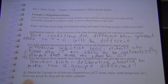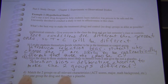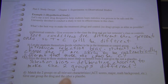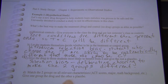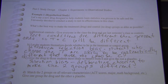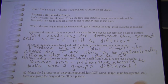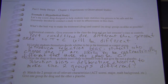A better approach: match on all relevant characteristics — like prior ACT scores and math background — and find matched pairs as close as possible on everything you can think of. Put one in each group. This is a great first step toward making the groups as alike as possible.